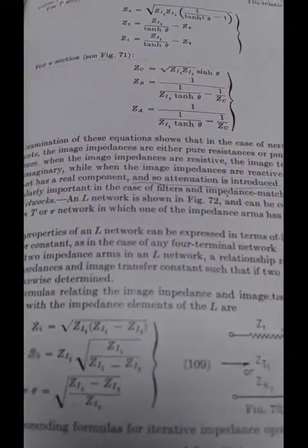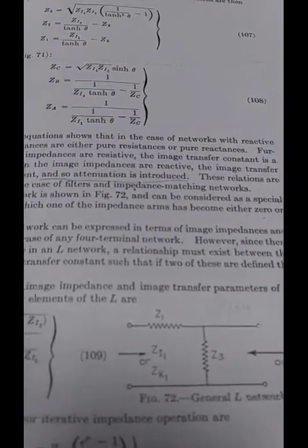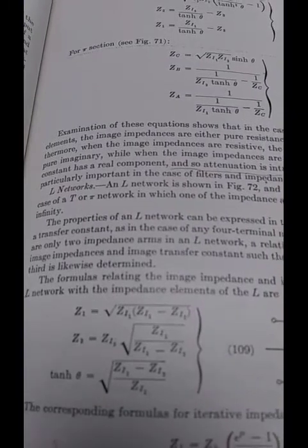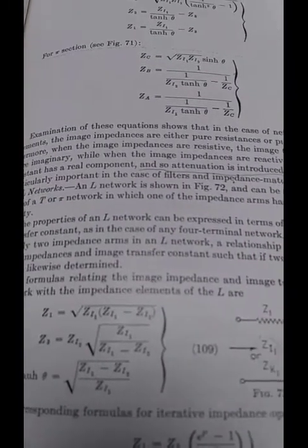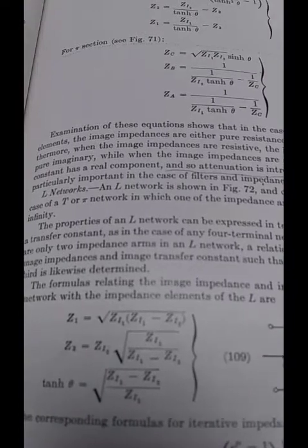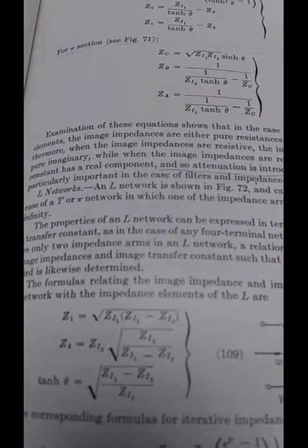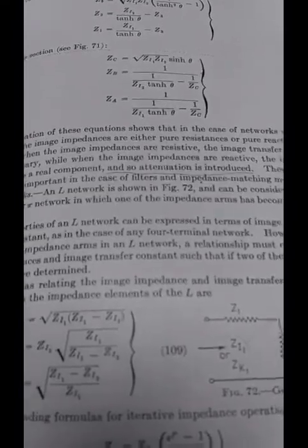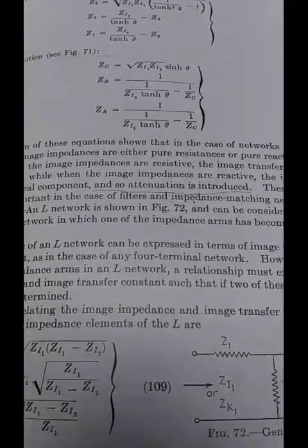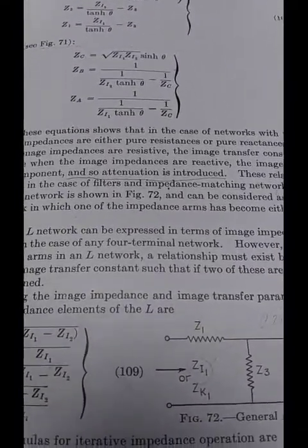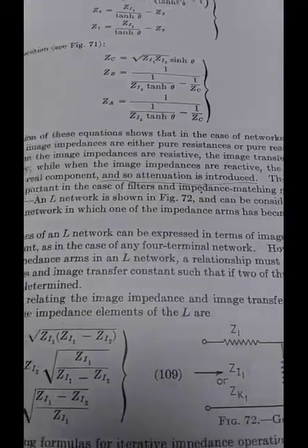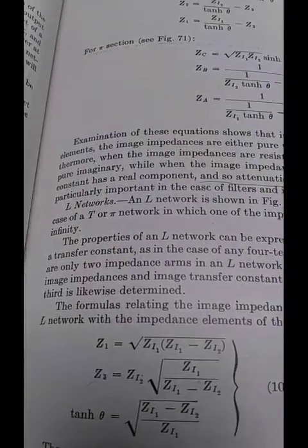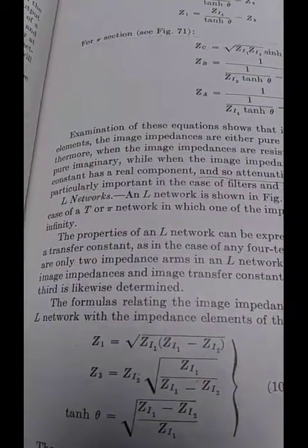Examination of these equations shows that in the case of networks with reactive elements, the image impedances are either pure resistances or pure reactances. Furthermore, when the image impedances are resistive, the image transfer constant is pure imaginary. In other words, when the impedances on each side of the network are purely resistive, the image transfer constant is pure imaginary, which means purely reactive, which means it doesn't waste any power.